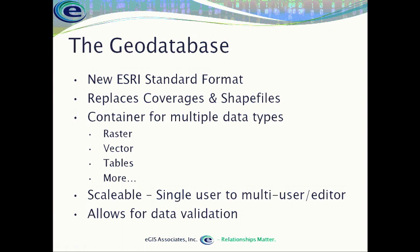The geodatabase also allows us to validate our data. The power of GIS is its ability to perform analysis based on attributes and spatial relationships, but that analysis is only as good as the data behind it. Within the geodatabase, we have tools that allow us to validate both the spatial and attribute data to make sure it's correct, so that when we perform our analysis, we know the results are also correct. The old saying — garbage in, garbage out — applies. Those validation rules we can apply with a geodatabase ensure that we're not getting garbage out.